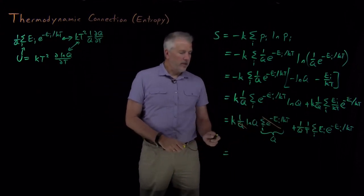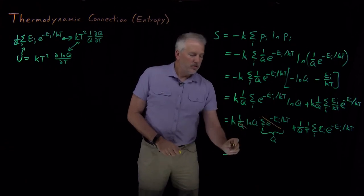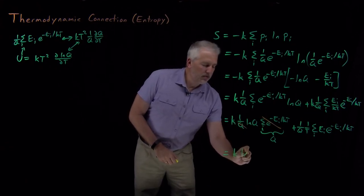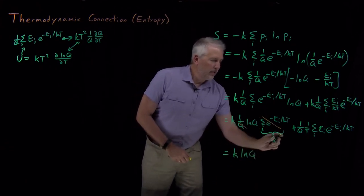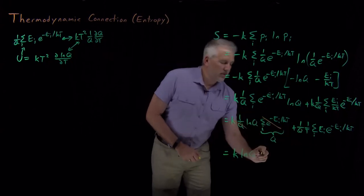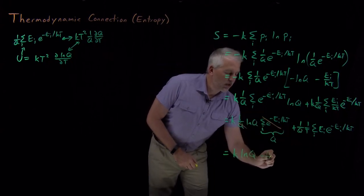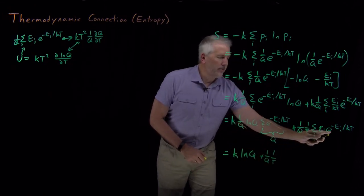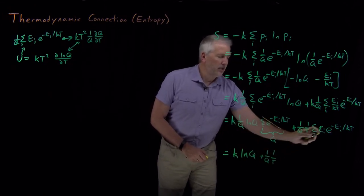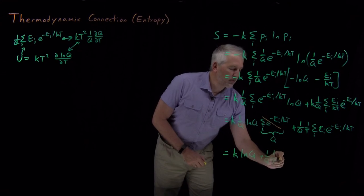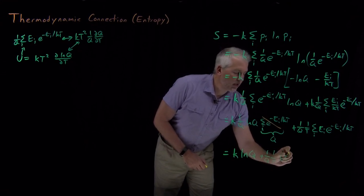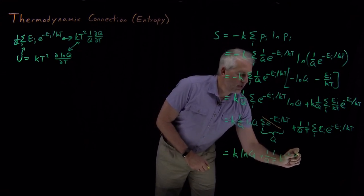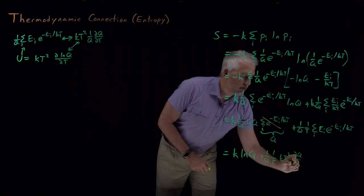And what I'm left with is after the q's cancel, I've got k log q for the first term. And in the second term, I've still got the 1 over q, 1 over t. And this sum of energy times e to the minus energy over kT becomes kT squared dq dt.